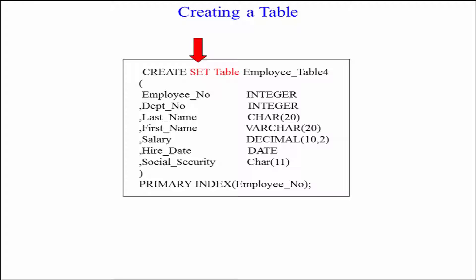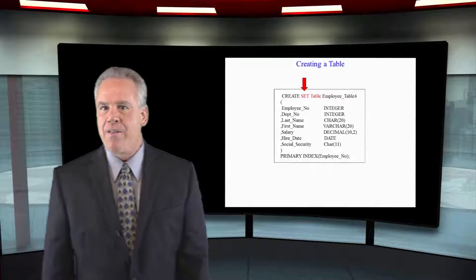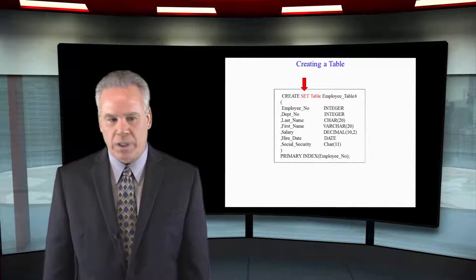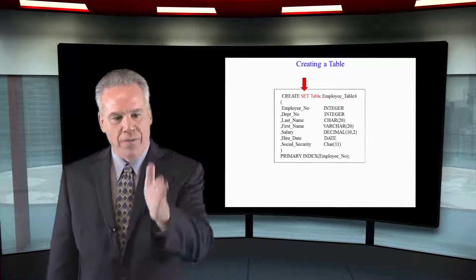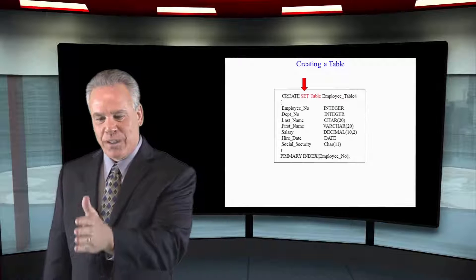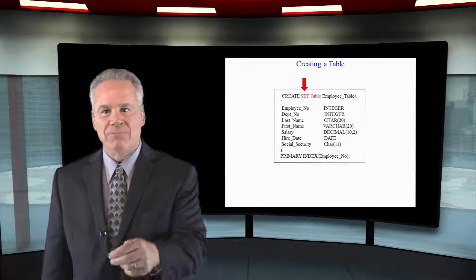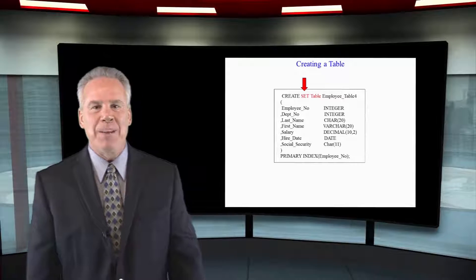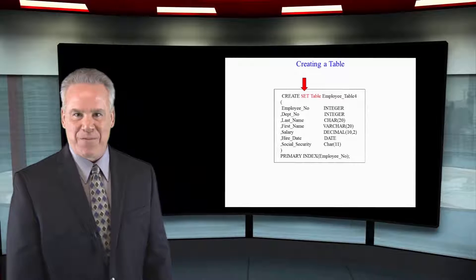Here we've created a set table and given it a primary index of employee number. If we have any rows that are duplicate across all of the columns — an exact duplicate match — it kicks out the second row coming in every time.